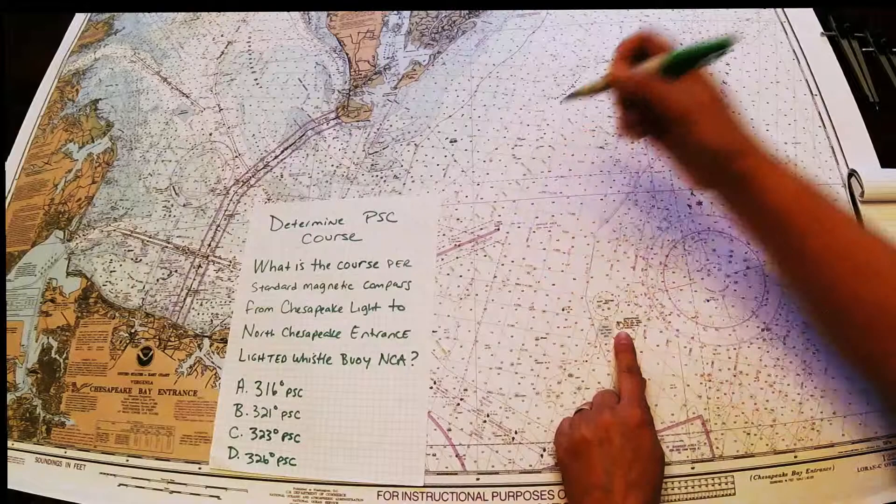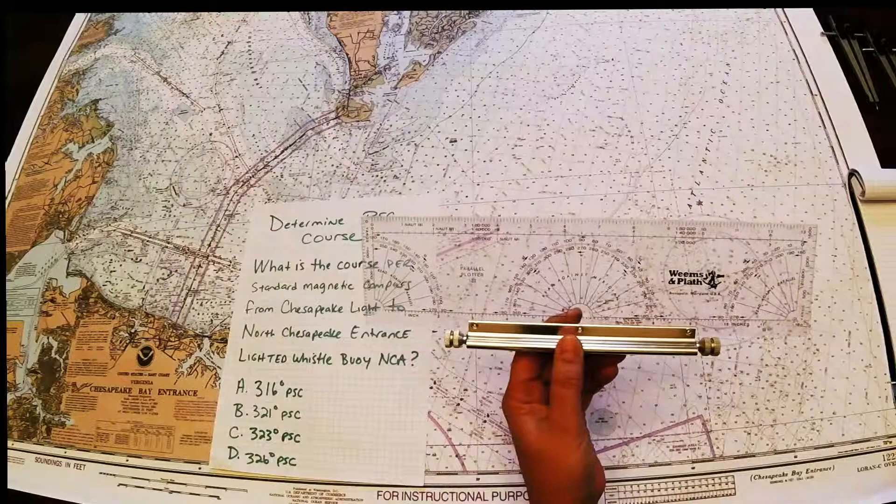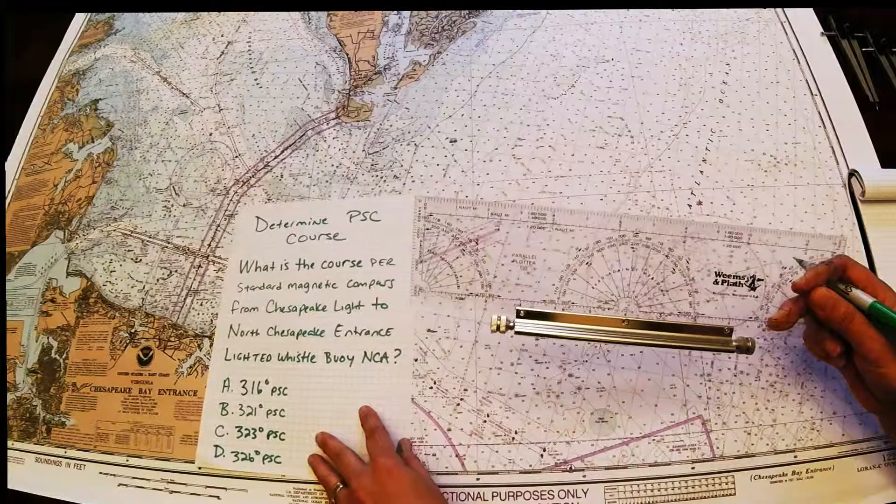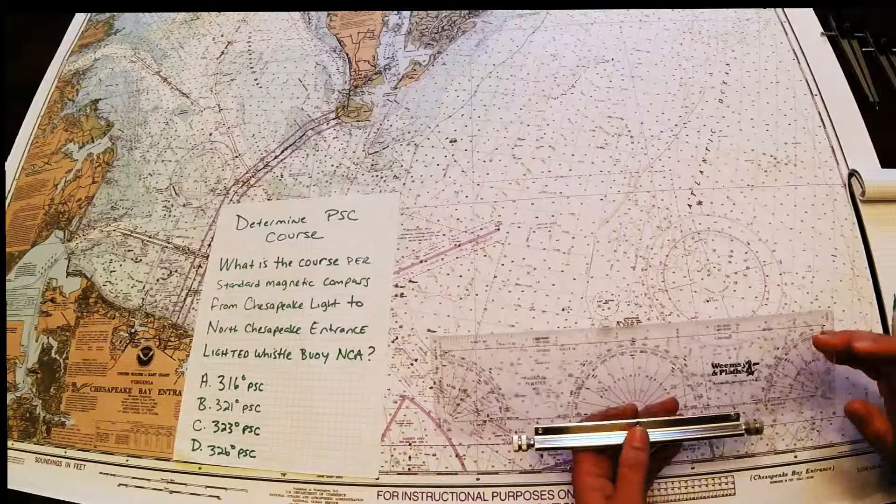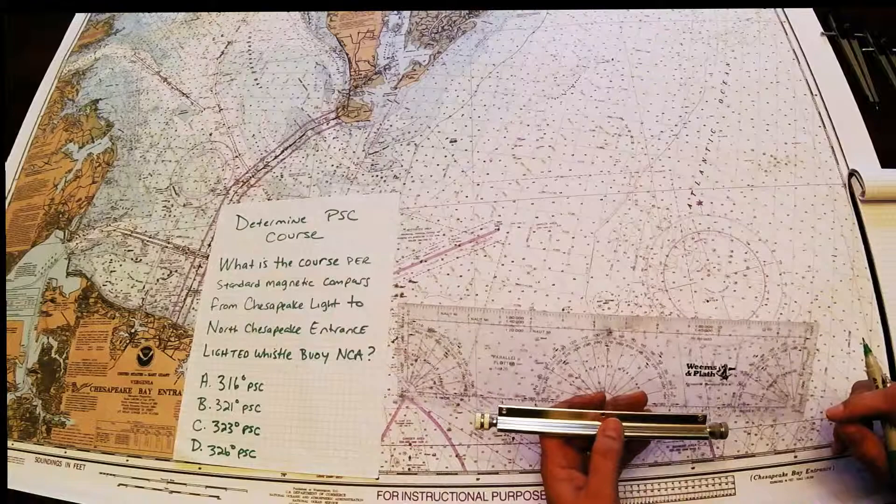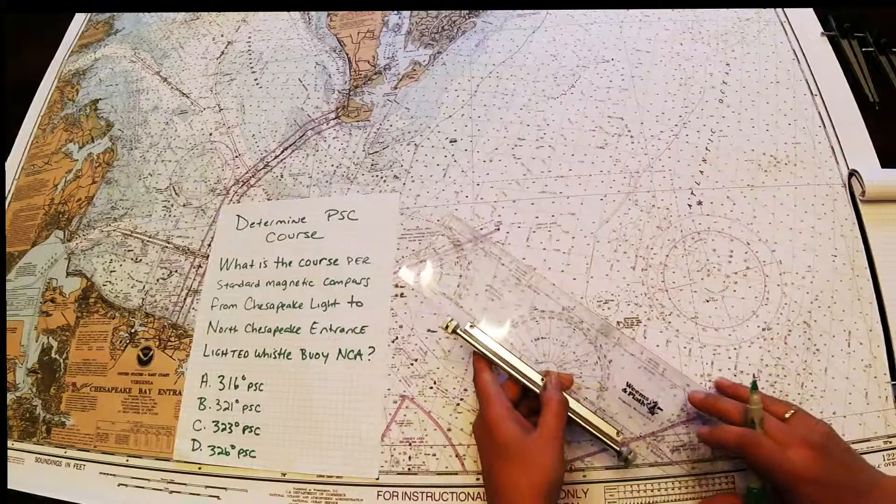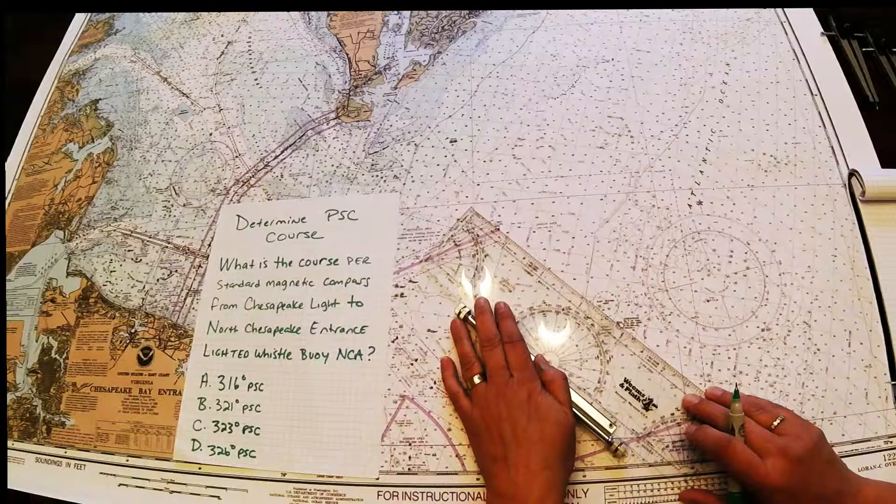So what we're going to do is use a parallel plotter. Now you may have a regular parallel ruler and that's fine too. I'm going to keep this really simple and take it to the compass rose. But there's other lectures where we'll show you how to use this without the compass rose. I'm going to line up the two points. So I have the Chesapeake Light and I have the lighted whistle buoy and I'm going to just put my parallel ruler up to those two nav aids.